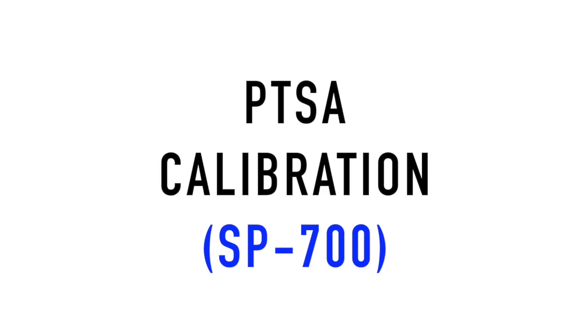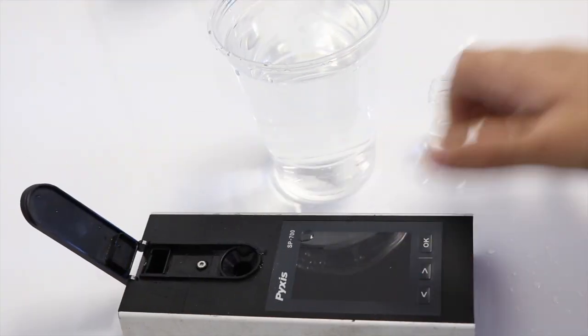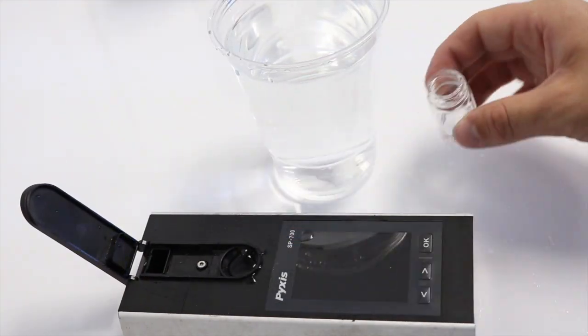This video is to display the general PTSA calibration for the Pyxis SP700 unit. Start by rinsing the SP700 sample cup with deionized water or DI water the standard three times.